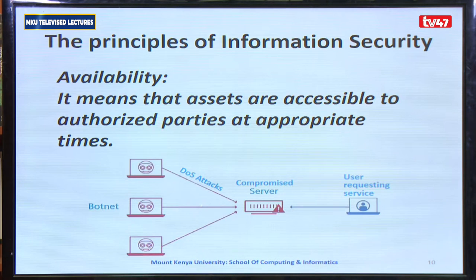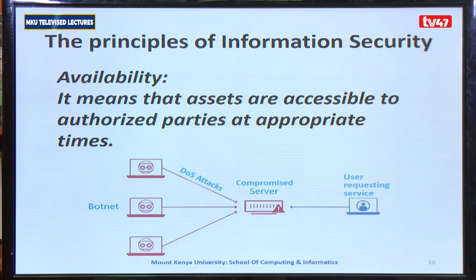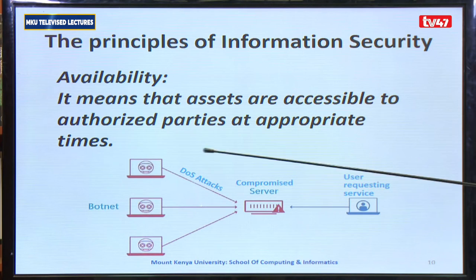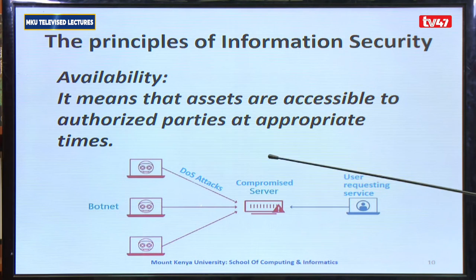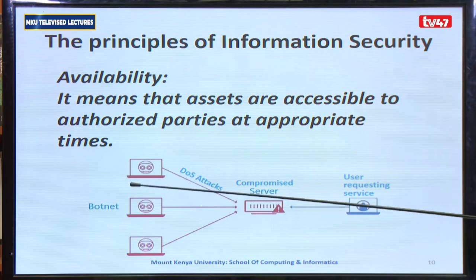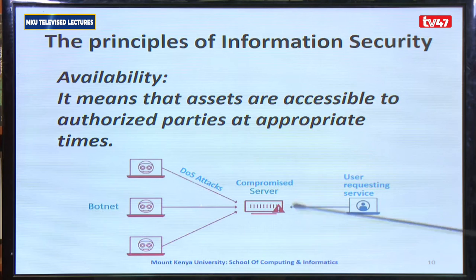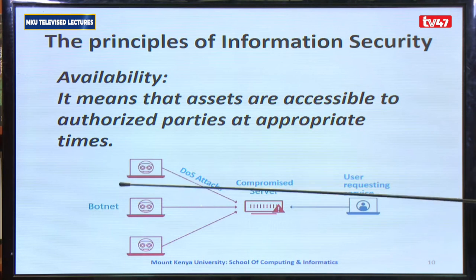The next one is availability, which means assets are accessible to authorized parties at the appropriate time. We are not just saying the data is available, but that it is available at the intended time. For example, if I make a request to a server to log into my bank, am I able to get that service on time? If the server is compromised using a botnet and denial of service attacks are launched, then the user requesting the service is not able to receive it — and at this point we say we don't have availability in such a system.